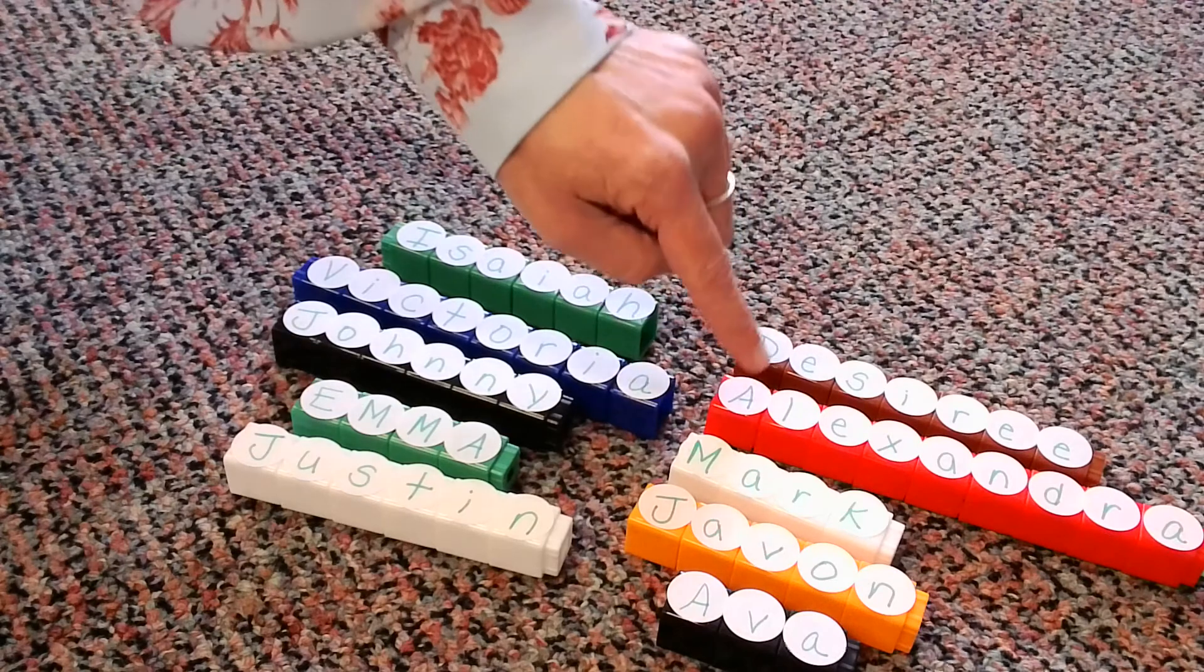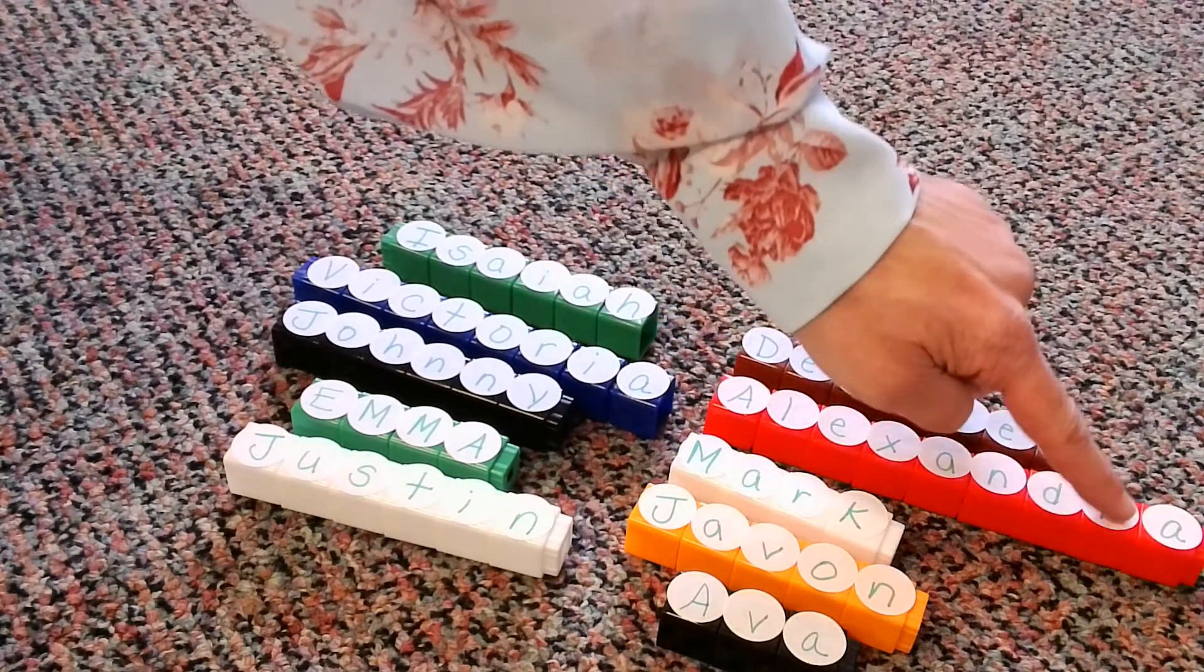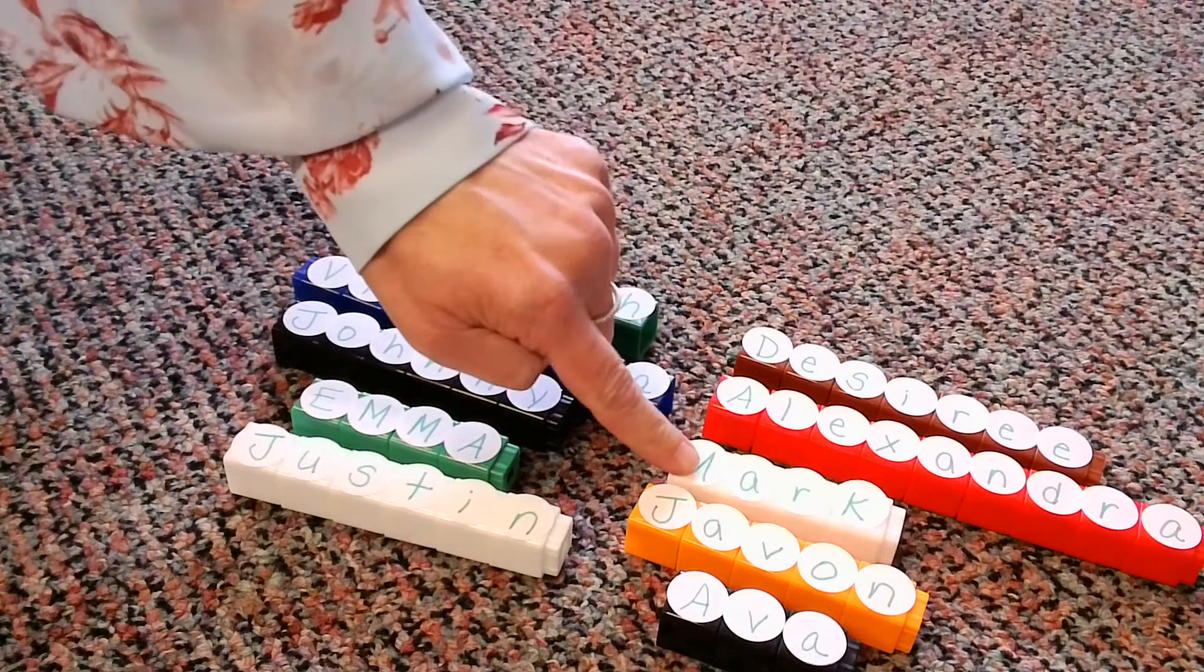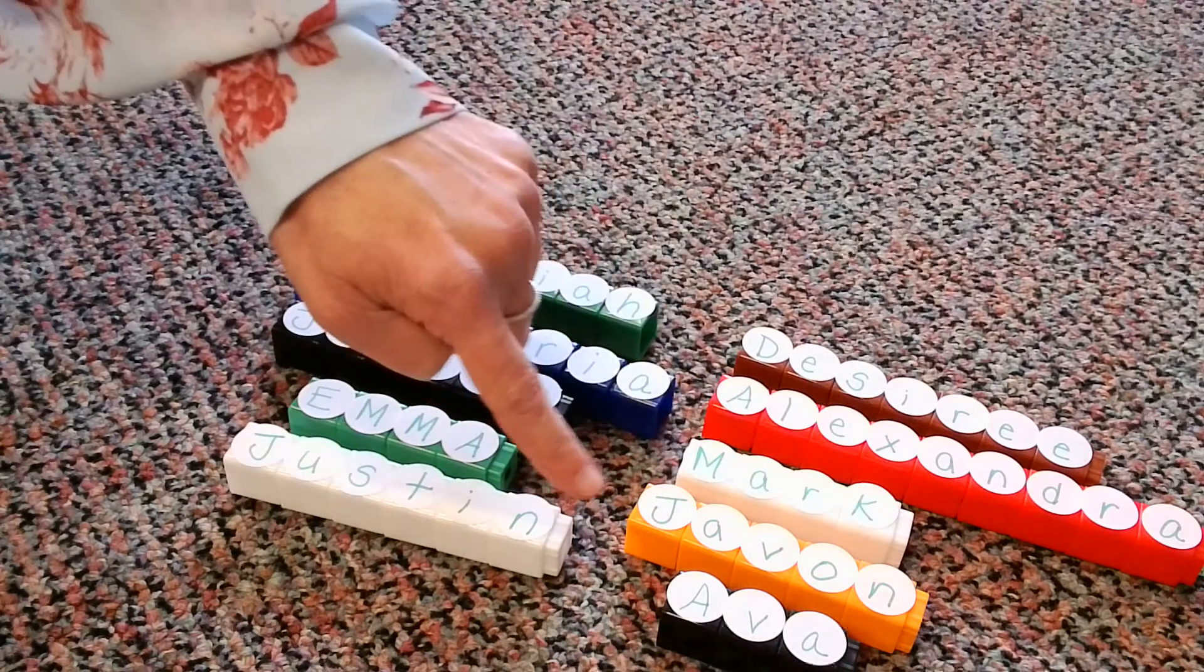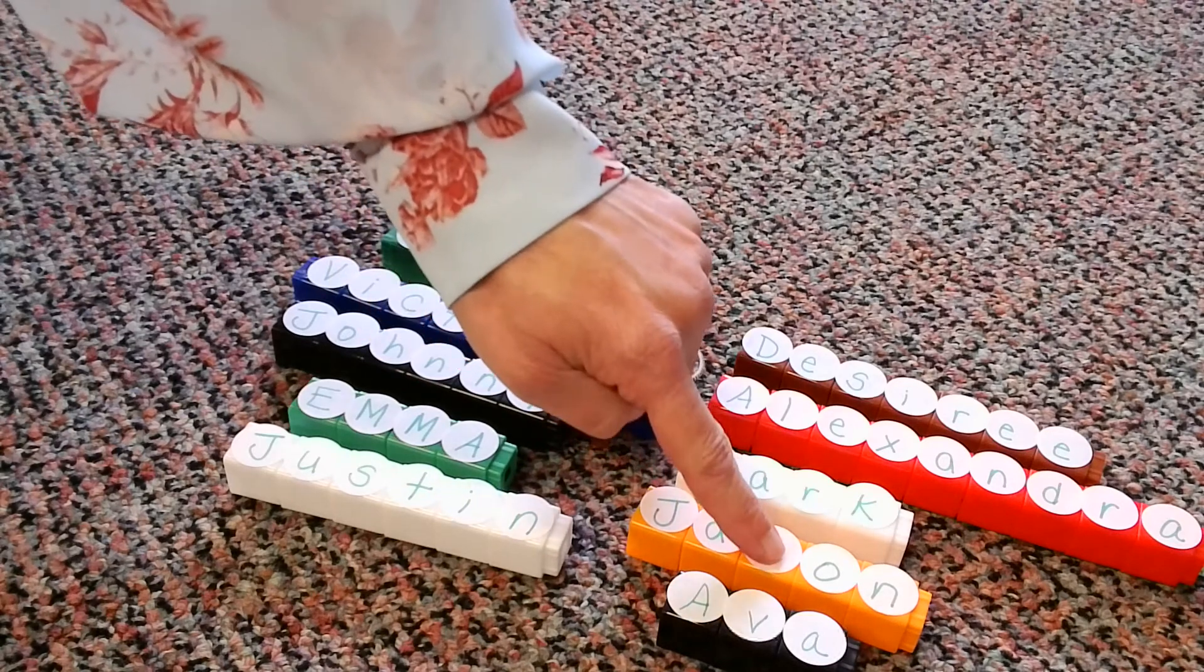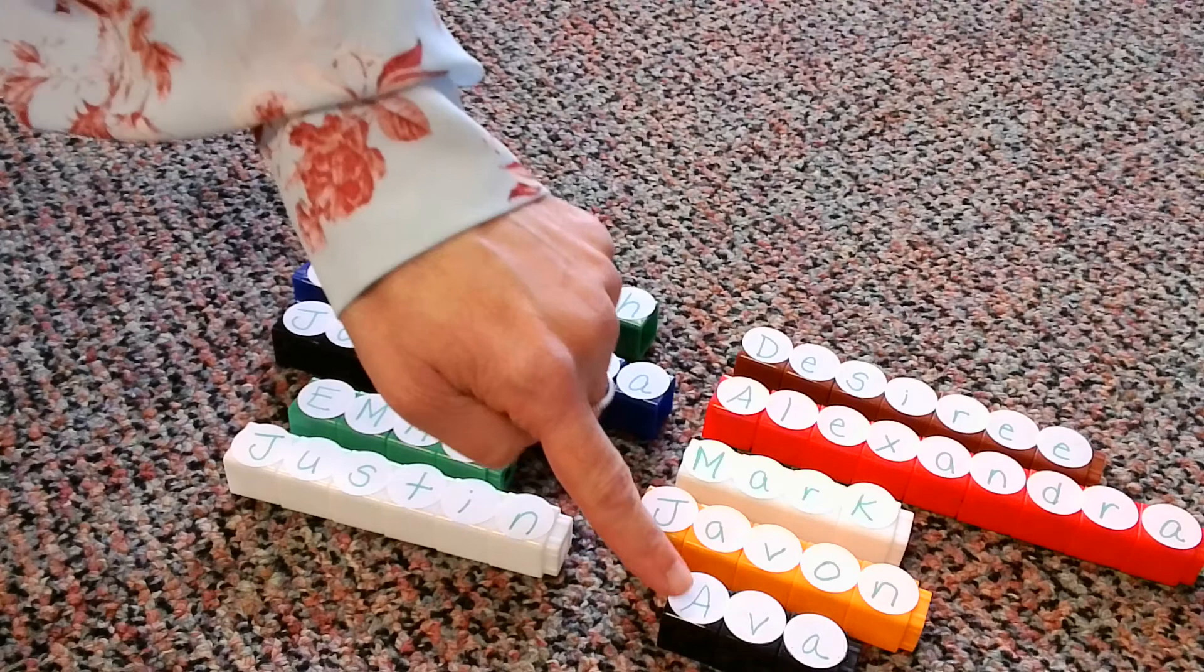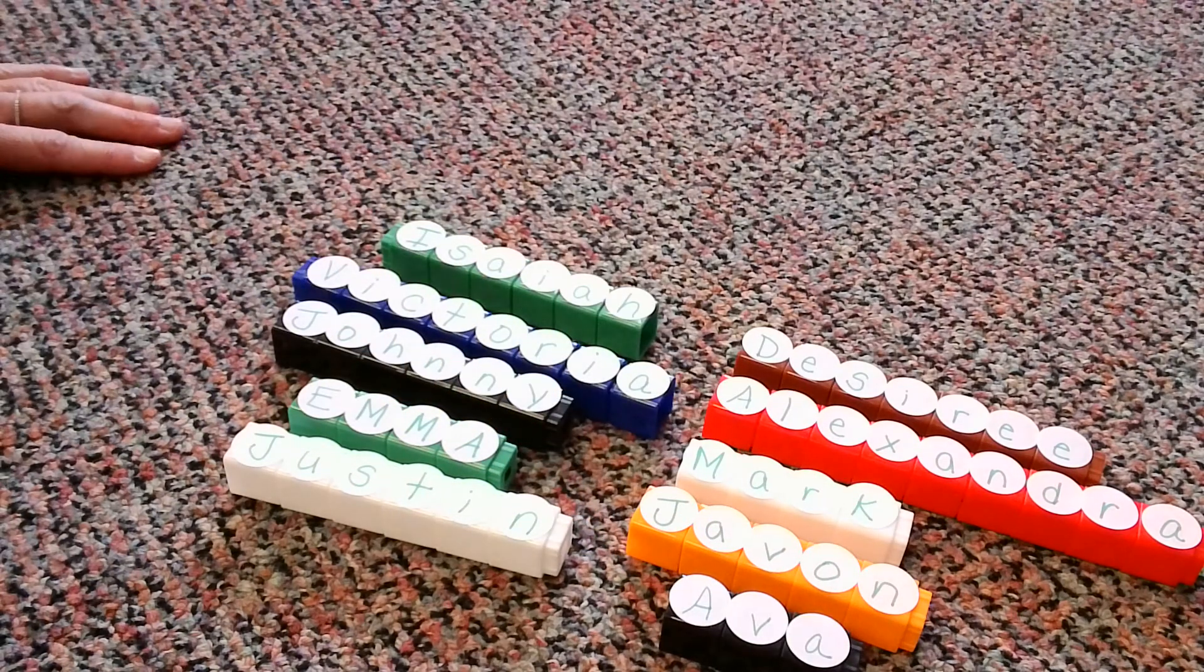Alexandra. One, two, three, four, five, six, seven, eight, nine. I think that's our biggest one yet. Mark. One, two, three, four. Javon. One, two, three, four, five. And Ava. One, two, three. I think Ava is our shortest, our smallest.